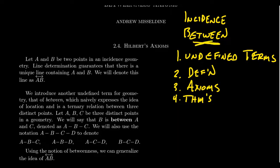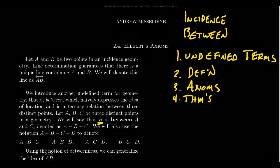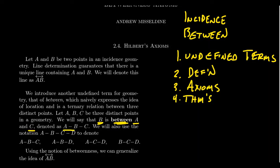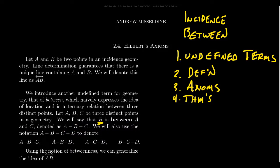Now for the betweenness axioms: what's the undefined term? It's the idea of betweenness — what does it mean to be between points? We're trying to express a sort of local behavior. We have three points forming a trinary relationship. So if you have three distinct points A, B, and C, we say B is between A and C, and we denote this as A-B-C. This is a trinary relationship we call betweenness. It's an undefined term — we don't say what it means, we interpret what it means via axioms.